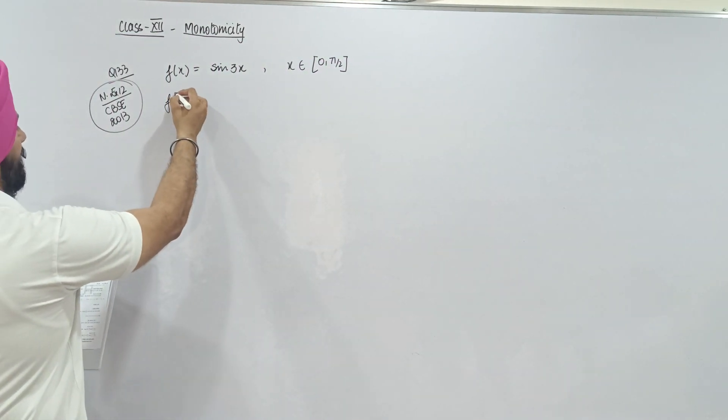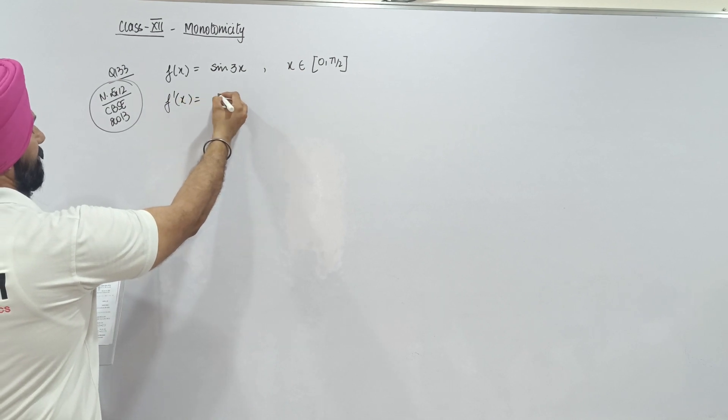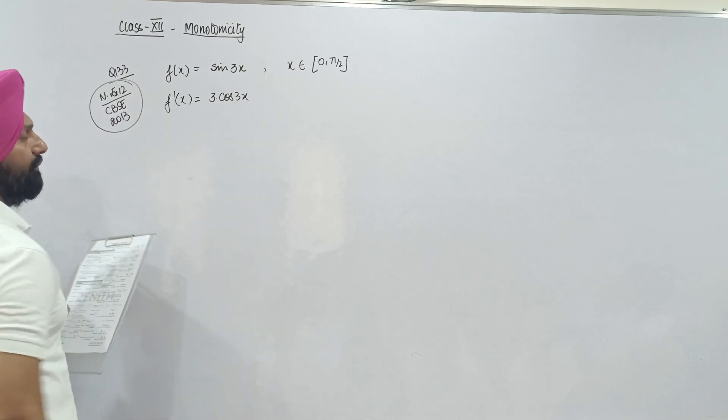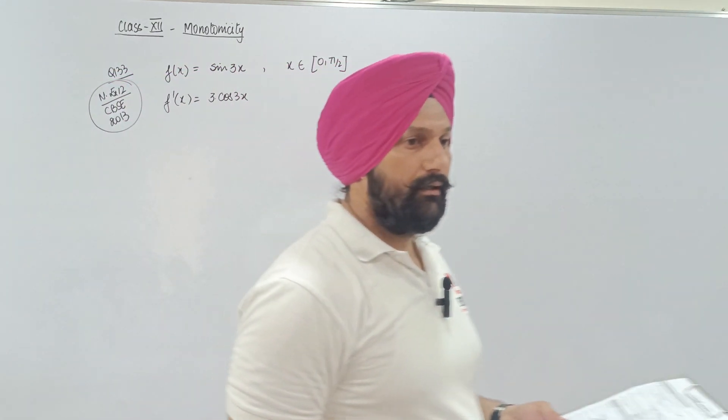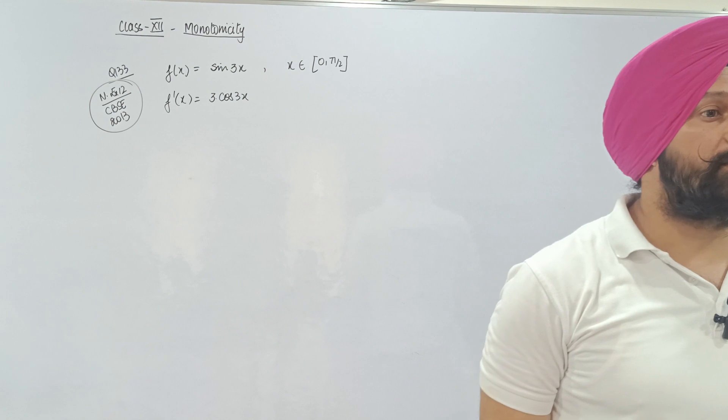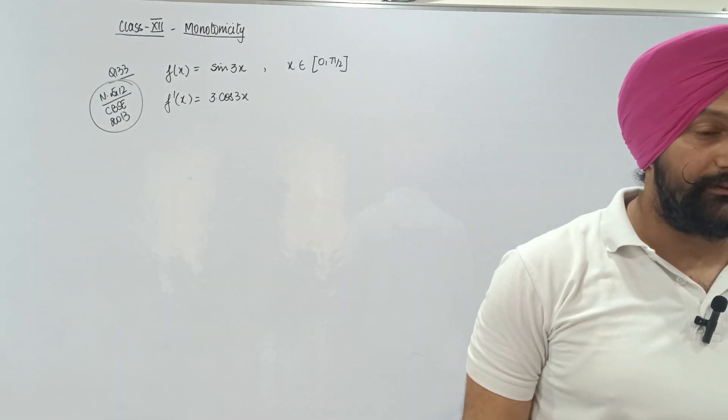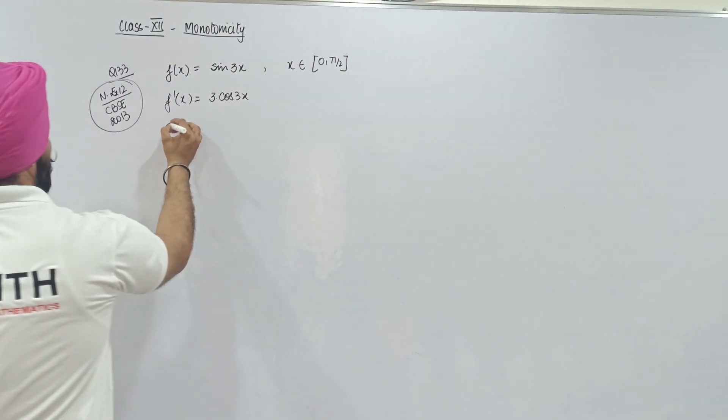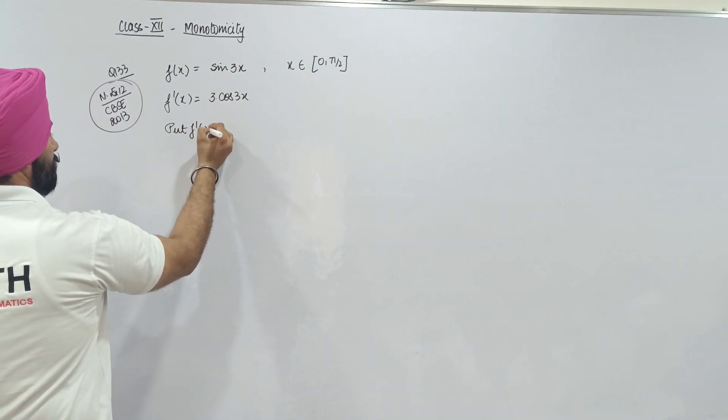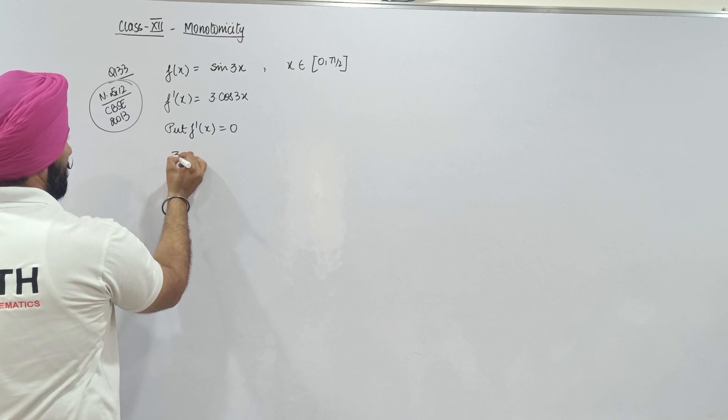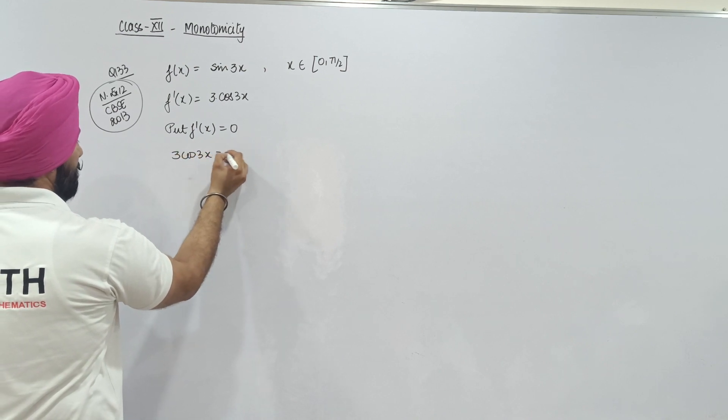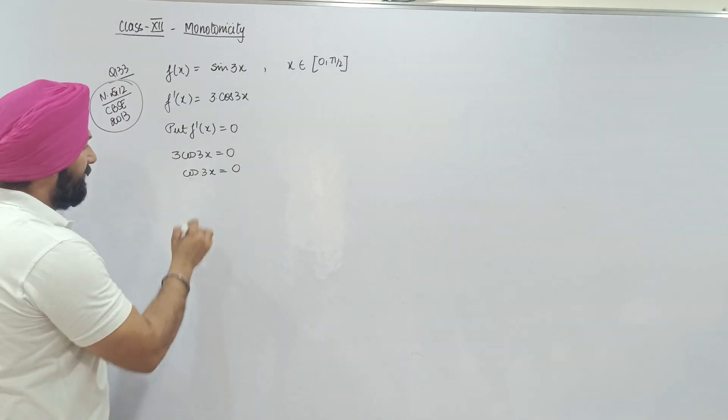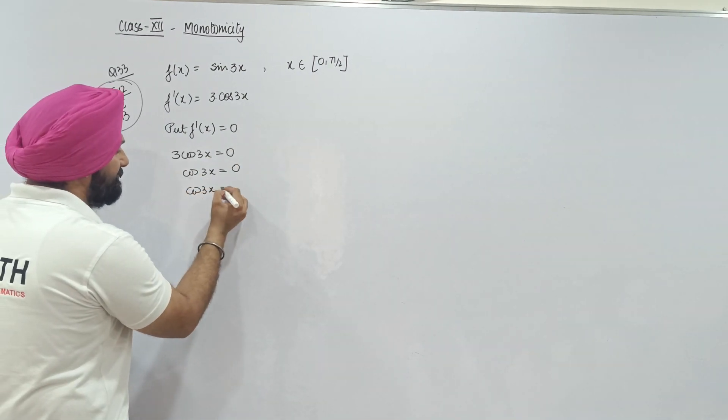As usual, f'(x) derivative of sin(3x) is cos(3x) multiply by 3. Is that clear? Now cos(3x) equals 0, which means cos(3x) is equal to 0.